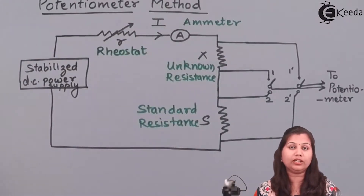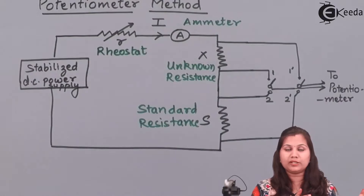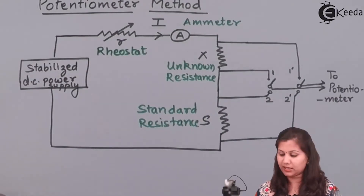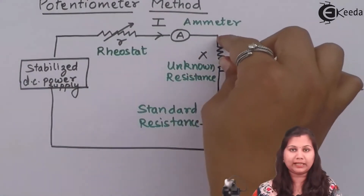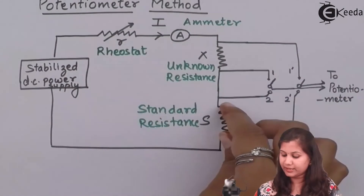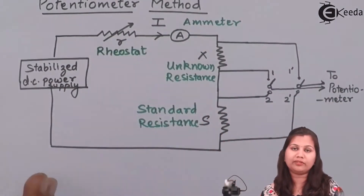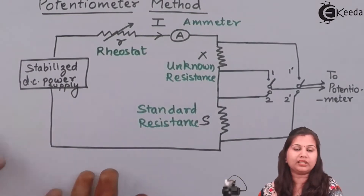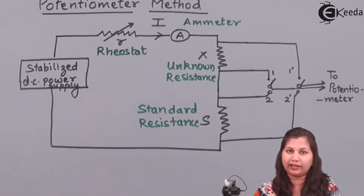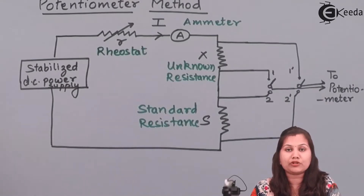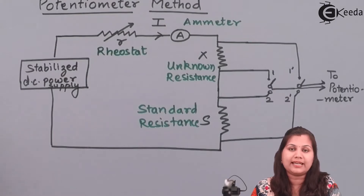So this is the expression for the unknown resistance. Using the potentiometer method we can find out the value of resistances which are very low — from 0 ohm to 1 ohm — we can calculate the value of those resistances using this method. The unknown resistance is connected here and the standard resistance is connected here; measuring the voltage drop and using that formula we can easily calculate its value. I hope this topic — measurement of low resistance using the potentiometer method — is clear to you. Thank you.